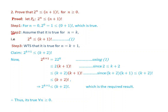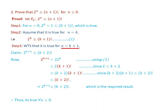Step 2: Assume that it is true for n equal to k, where k is greater than or equal to 0. That is, 2 to the power of k is less than or equal to (k+1) factorial. Call this equation 1. Step 3: We want to show that 2 to the power of k plus 1 is less than or equal to (k+2) factorial.